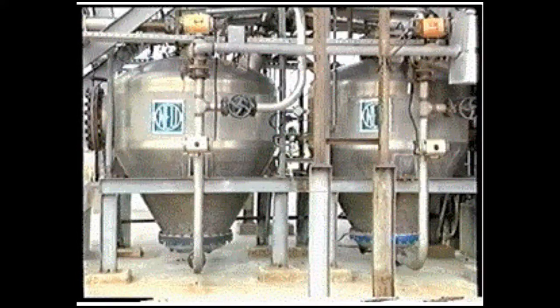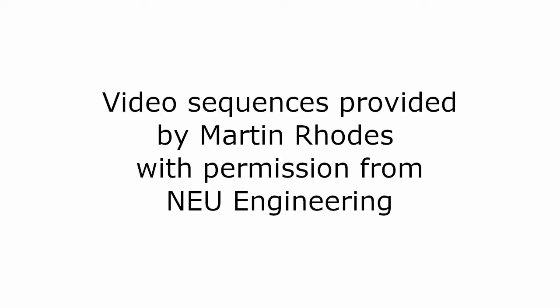The dense phase system can be made to operate in a semi-continuous mode by the use of two blow tanks in parallel, as shown in the photo on the left. Both these blow tanks are fitted with fluidizing elements at the bottom.